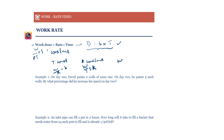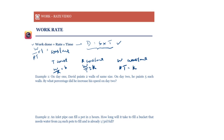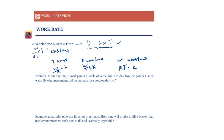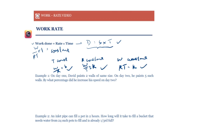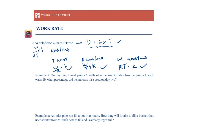When work is constant, rate times time is a constant — meaning rate varies inversely with time. This is exactly the same relationship we had with distance equals speed times time. We'll use these variation relations extensively in work rate problems, mostly through ratios without needing to introduce variables.